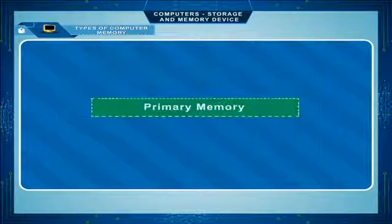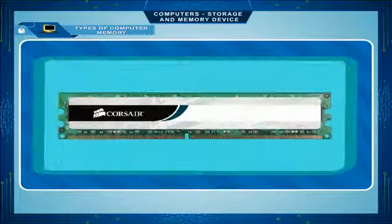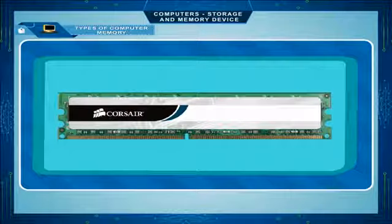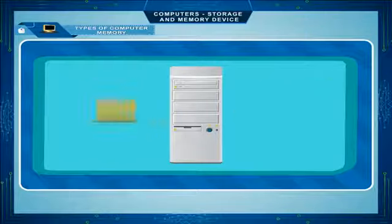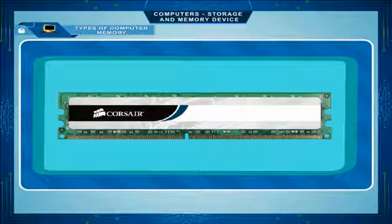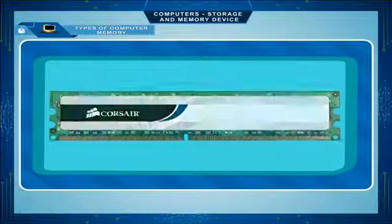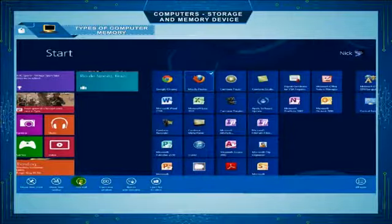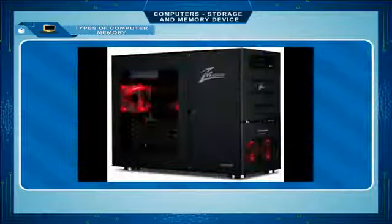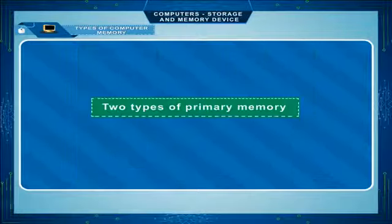The primary memory is the main memory of the computer that stores data and instructions for processing. It is internal memory that is continuously overwritten with new data and programs for quick access. It communicates directly with the CPU. There are two types of primary memory: RAM and ROM.